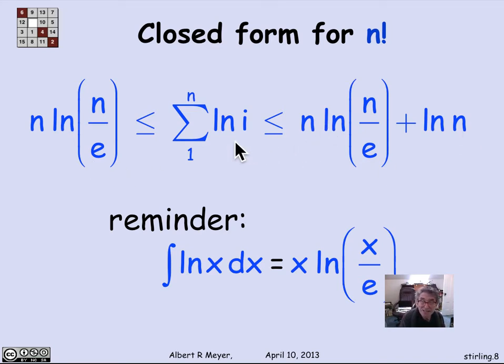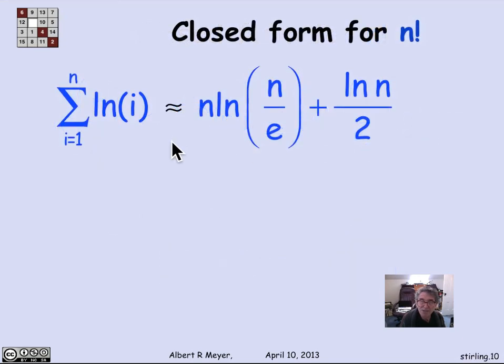What that means is that, informally speaking, the sum of the logs is about this term plus that term plus, let's take the average value of that term, which is half this term. So we could say that the sum of the logs is approximately equal, that's a little vague but live with it, n log n over e plus half of log n.